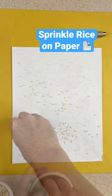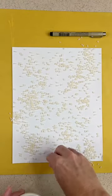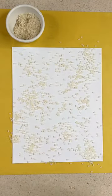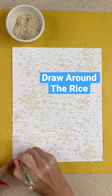Sprinkle the rice on your paper however you want it, whether you want a lot or a little. It doesn't really matter. And then take your pen and draw around each bunch of rice.